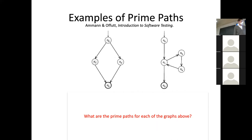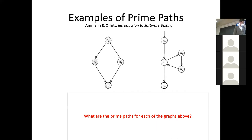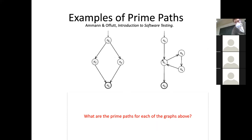Now let's go to the one on the right — this one is more textured. N0, N1 here is this node; N3, N4, and N2 are the others. Can anyone tell me some simple paths here? N0, N1, N3, N4 — that is a valid simple path. If it were N0, N1, N3, N4, N1, would that be a simple path? No — because N1 would repeat internally, violating the rule that repetition is only allowed at the start and finish.